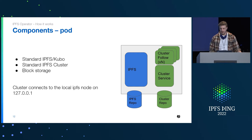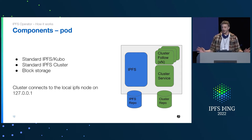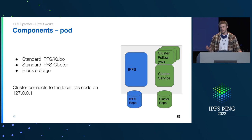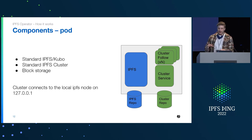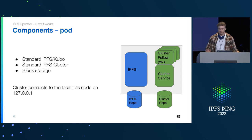These are the components that get created. This is basically a layout of what the pod looks like. In Kubernetes, a pod is basically a unit of work — it's a bunch of pieces of software that run in a way where they share networking. So typically when you set up IPFS cluster, as Hector described earlier, you have a Kubo node and an IPFS cluster that runs next to it and talks to the local node. Here we did the same thing — we're just making Kubernetes wrappers around it. We have an IPFS node with some block storage attached, and a cluster service able to talk to it on 127.0.0.1.